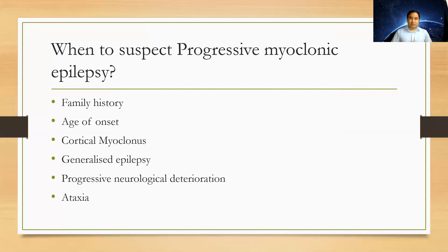Still, with all the symptoms matching — onset at age 13, progressive cognitive deterioration, and similarity with the elder brother — this is probably a case of Lafora body disease. Without proper knowledge, we may treat the epilepsy part but tend to consider the myoclonus as some form of functional component. That is why we need to think about progressive myoclonic epilepsy.